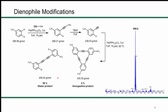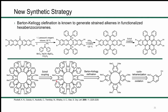After all this, with really no success in functionalizing the 12-annulene, this project got put on the back burner while I worked on other projects. Near the end of my time in grad school, other members of the group working on their own PAHs were having some success using Barton-Kellogg olefination to synthesize their molecules — a well-known procedure for producing strained aromatics such as functionalized hexabenzocoronenes.